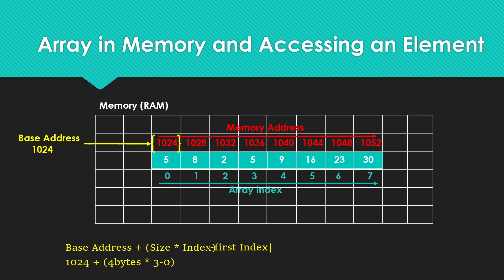For zero-based indexing, you don't need to do the subtraction. For example, 3 times 4 gives 12, and 12 plus 1024 gives the memory address, allowing us to access that particular value. This operation is done in O(1) time. Once we know the index, we simply do the calculation — even if we have a million items in the array, we can access the millionth element in just a snap of a finger.